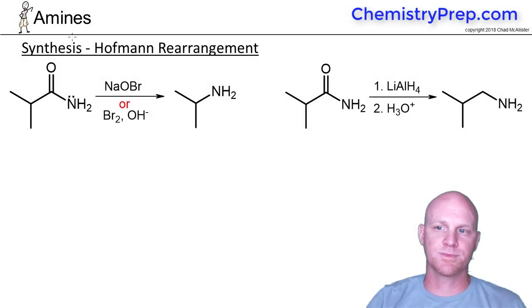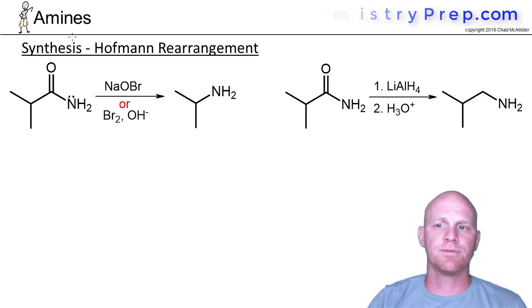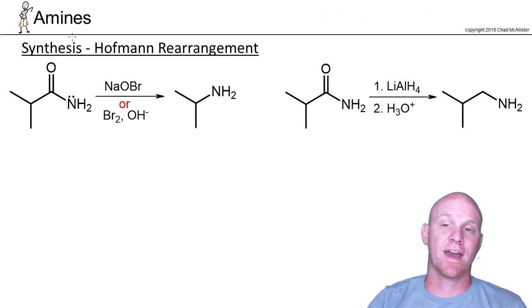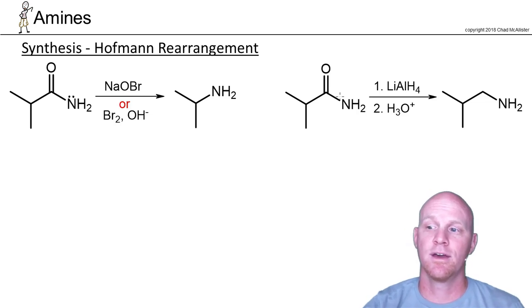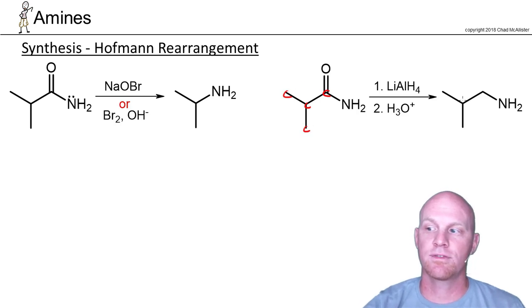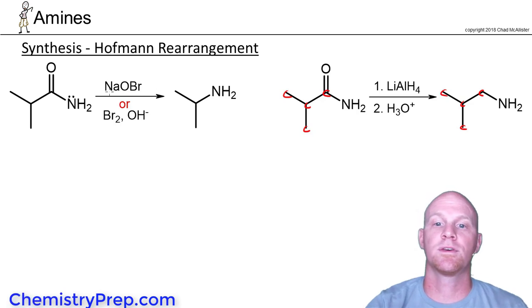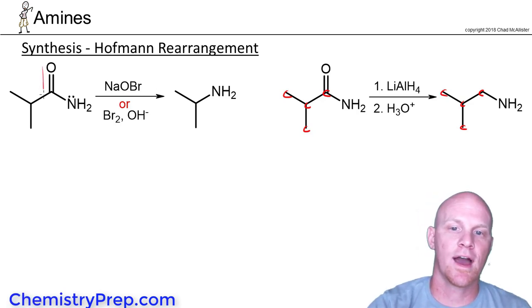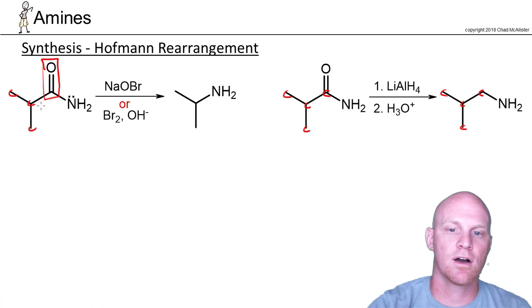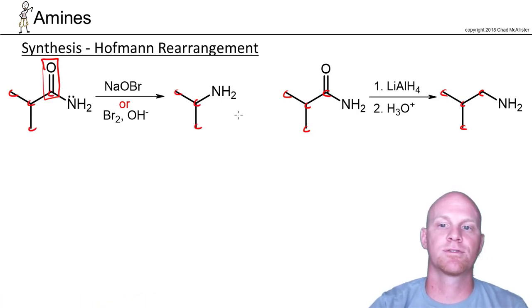Now we're going to take a look at the Hoffman rearrangement. This reaction is new, and a lot of students will confuse this one with the reduction of an amide, so I just want to compare the two. With the reduction of an amide using lithium hydride, we start off with four carbons and end up with four carbons. With the Hoffman rearrangement, we're actually going to lose the entire carbonyl group — starting with four carbons but ending up with three.